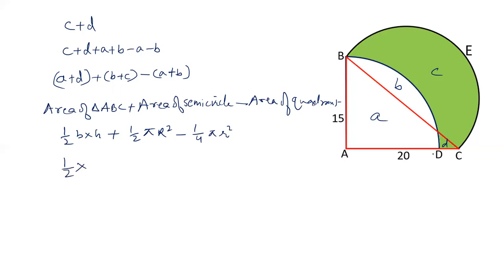Base of triangle is 20 and height is 15. So, this is 20 into 15. 1 upon 2 pi. The radius of semicircle we have just now calculated diameter is 25. So, radius is 25 by 2 square. 1 by 4 pi and radius of this quadrant is 15. 15 square.